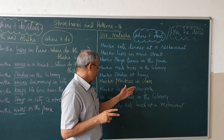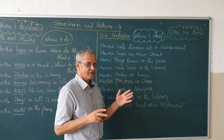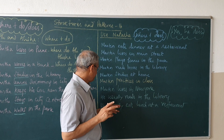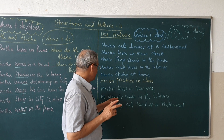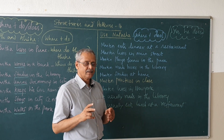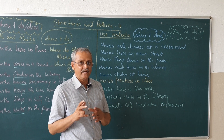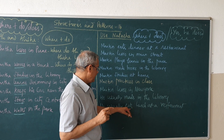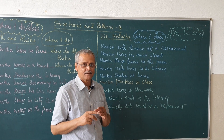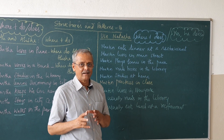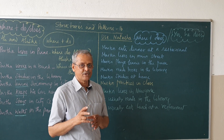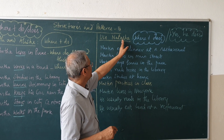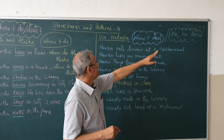Martin lives in New York — where does Martin live? In New York. He usually reads in the library — where does he usually read? In the library. He usually eats lunch at a restaurant — where does he usually eat his lunch? At a restaurant. Now let us substitute with Natasha.